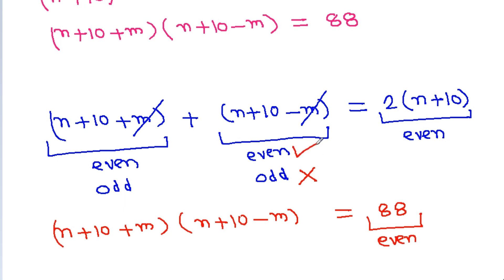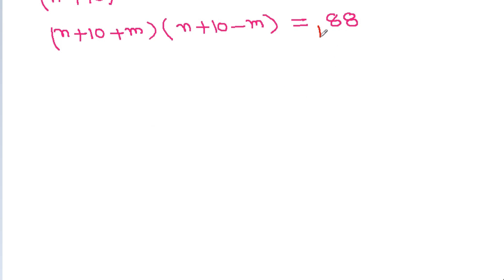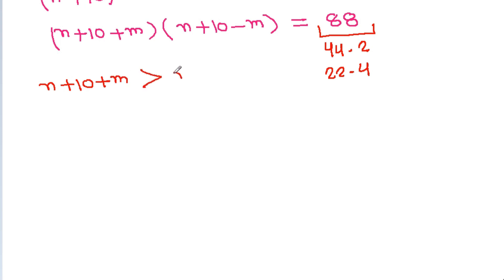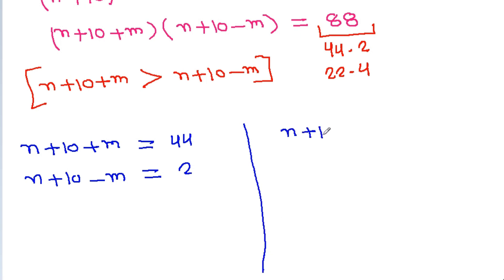Since 88 is a product of two even numbers, the possible factor pairs are 44 times 2 and 22 times 4. Note that n plus 10 plus m is always greater than n plus 10 minus m. So Case 1 is: n plus 10 plus m equals 44 and n plus 10 minus m equals 2. Case 2 is: n plus 10 plus m equals 22 and n plus 10 minus m equals 4.